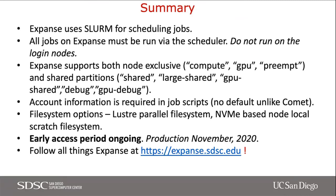To summarize the running jobs talk: we are using Slurm just like Comet, all jobs must go through the scheduler, and don't run on login nodes. We support both node-exclusive and shared partitions with some extra options for GPU and preempt. Account information is required in job scripts, and you should also explicitly specify memory requirements. We are going into production soon, and you'll all get to try this once the machines are available in production.